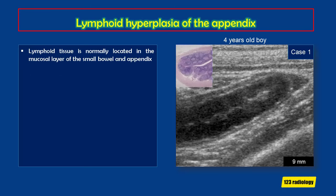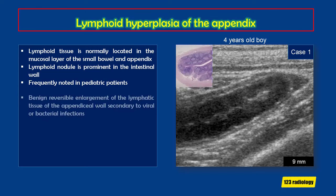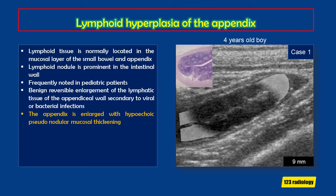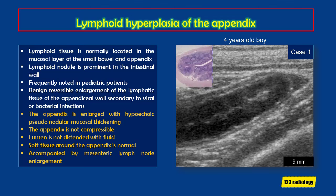Intestinal lymphoid tissue is normally located in the mucosal layer of the small bowel and appendix, appearing as lymphoid nodules or lymphoid infiltrate. When prominent, it is referred to as intestinal lymphoid hyperplasia. This is frequently noted in pediatric patients and represents a benign reversible enlargement of the lymphatic tissue, secondary to viral or bacterial infections. On sonography, the appendix is enlarged with hypoechoic pseudonodular mucosal thickening representing enlarged lymphoid follicles. The appendix is non-compressible but the lumen is not distended, the surrounding soft tissues are normal, and mesenteric lymph node enlargement is often present.